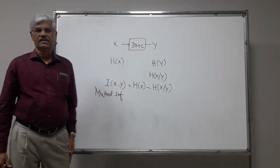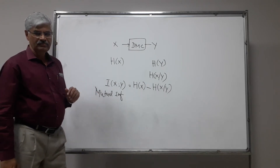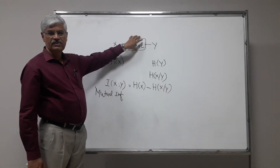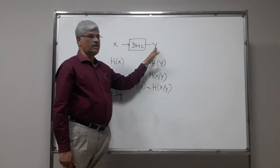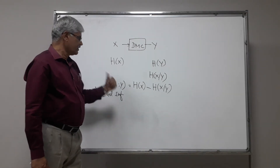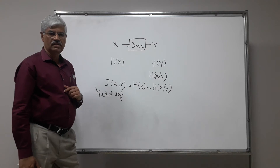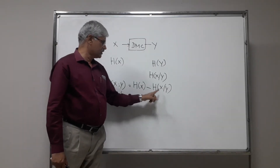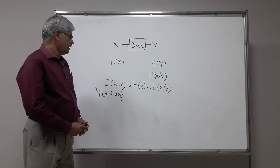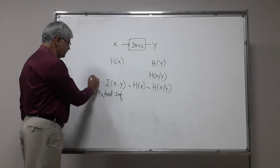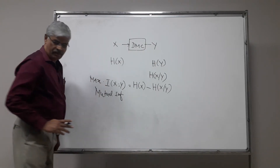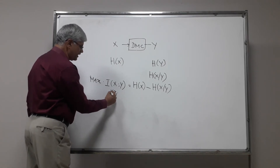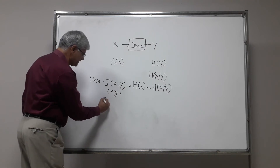What does this mutual information tell us? Ultimately, what we are interested in is the maximum transmission rate to a particular channel for error-free reception. For this, we make use of the knowledge of the entropy and arrive at the result. Mutual information is H of x minus H of x given y, and the maximum of mutual information — the maximum over all x — is called the capacity of the channel.